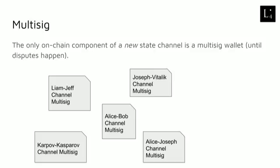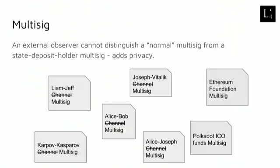Coming back to what I said — the only on-chain component of a state channel is the multi-signature wallet. This allows us to minimize the amount of code that needs to be deployed on-chain, because a multi-sig wallet is not many lines of code. This also gives us really nice privacy benefits, because an external observer cannot distinguish a normal multi-sig from a multi-sig that's being used as part of a state channel. Looking at this multi-sig, I don't know if Liam and Jeff are just having a normal multi-sig or if they have a state channel going on between them. So that really improves privacy.